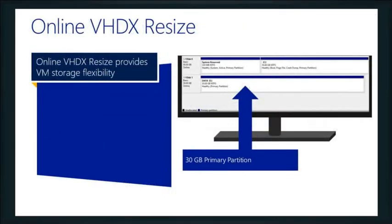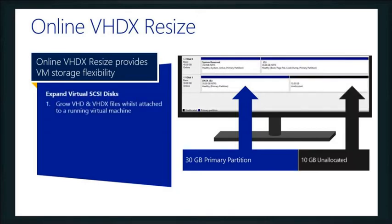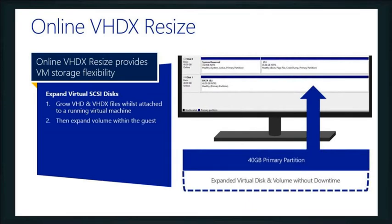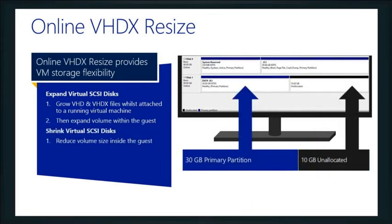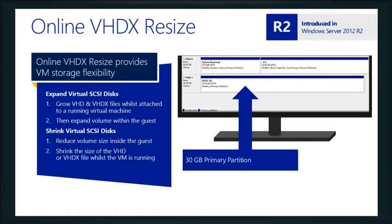Speaking of those VHD files — specifically on the VHDX files — we can actually resize them dynamically online. This is something we introduced with R2. We can even shrink them online if we want to as well. So we can grow and shrink our VHDX files dynamically through our tools. VMware had the grow capability for a while, and we just added it; I don't believe VMware can shrink yet, but we now support both grow and shrink online.